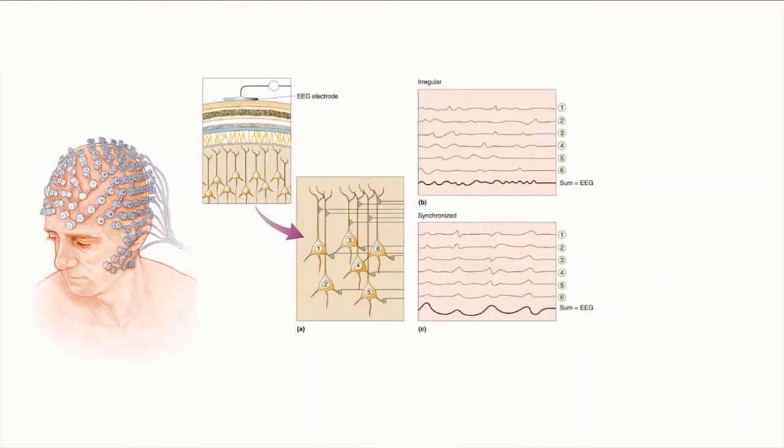EEG is measuring post-synaptic potentials, and really it's only measuring with a depth of about five millimeters. That sounds like a really big limitation. But if you remember from the first lecture about neuroscience, most of the functionality we're interested in is happening in the very thin outer layer of the cortex. So maybe it's not such a big deal that we only have a penetrating depth of five millimeters, since most of what we're interested in happens at that depth anyway. In that layer we have vertically oriented pyramidal neurons, and if enough of those pyramidal neurons fire in synchrony, that creates a signal with a strength that we can actually measure and observe. That is fundamentally what the EEG is measuring — the coordinated synchronized firing of those upward pointing pyramidal neurons.